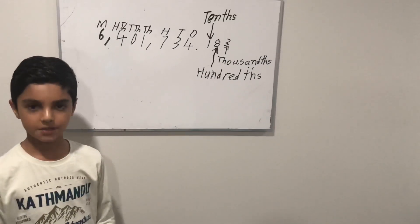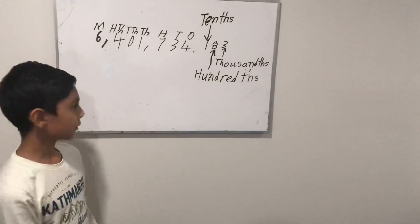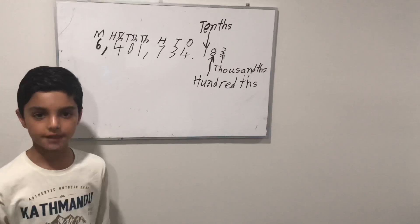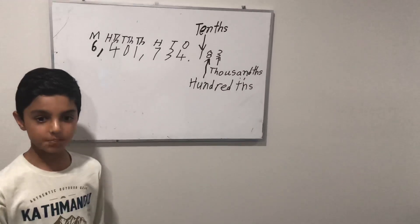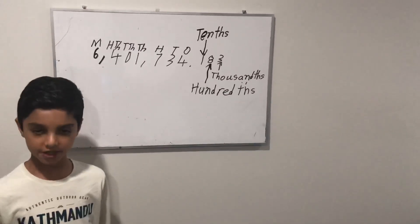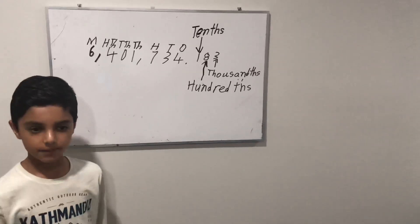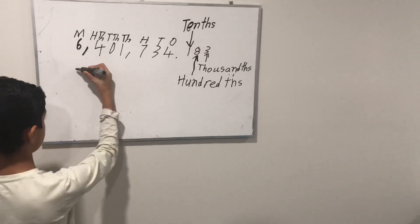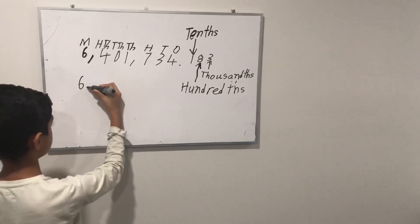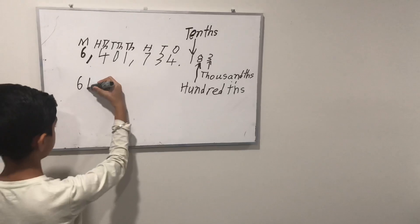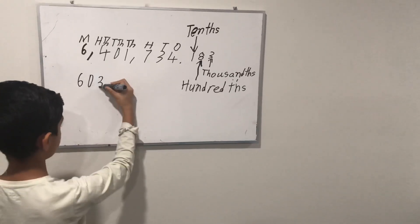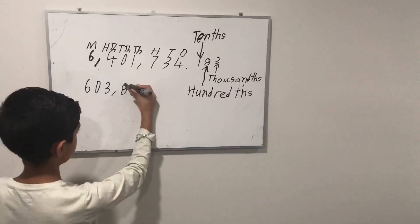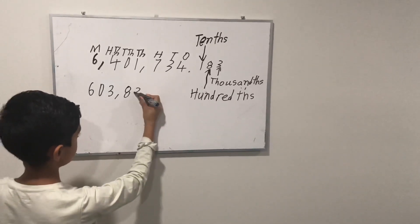Let's play a game. I'm going to draw a number and I'm going to underline one digit of it. You need to try and guess which place that underlined digit is in. Now let's start. The first number is 603,831.